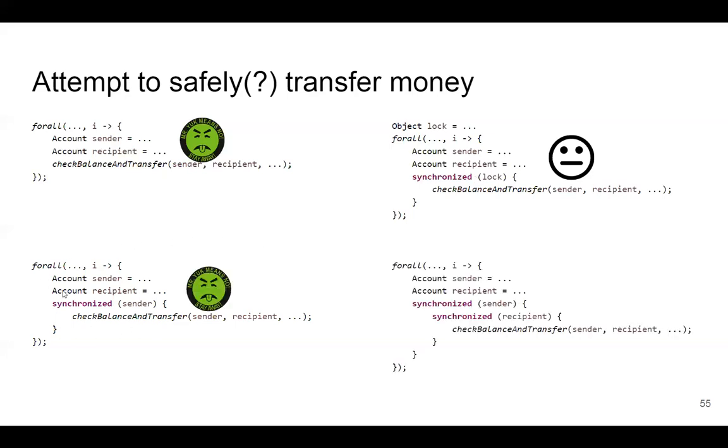You could synchronize on just the sender, but now multiple people could be transferring to the recipient, so this is also a data race and a disaster. You could synchronize on both objects, the sender and the recipient. You'd have to acquire both locks, both intrinsic locks, before you transfer money.